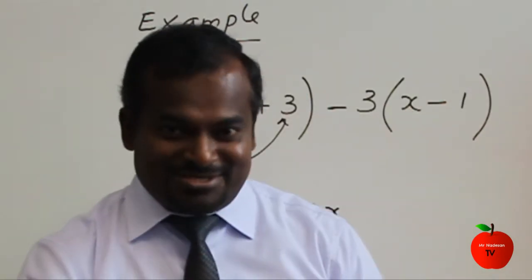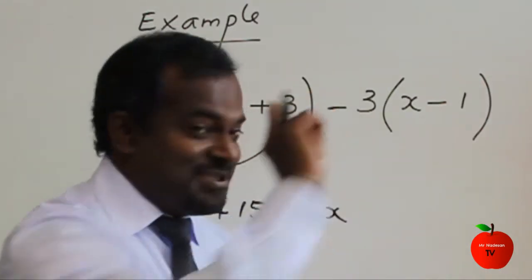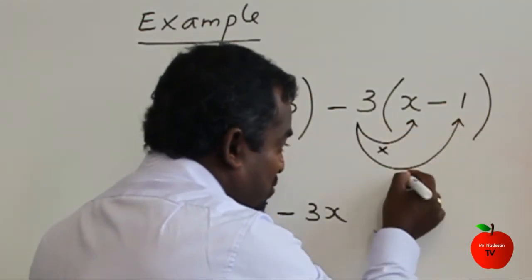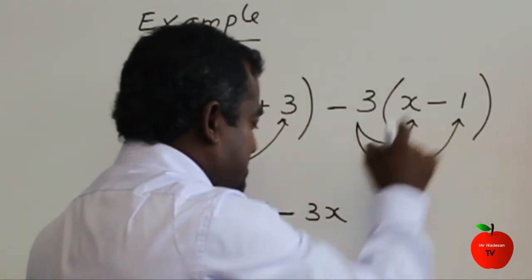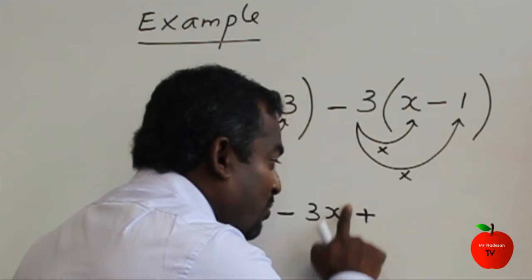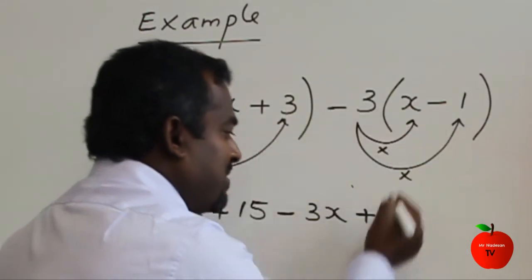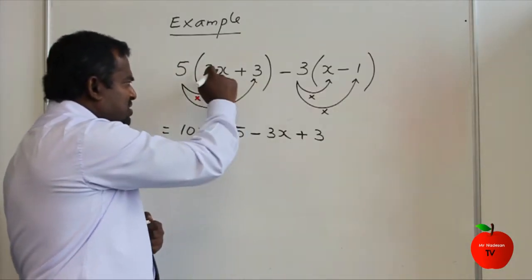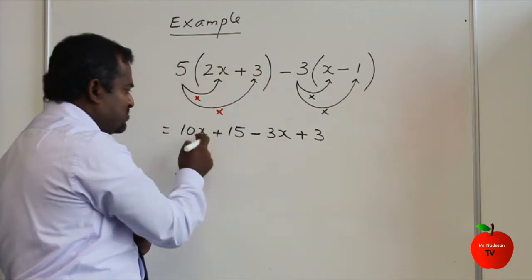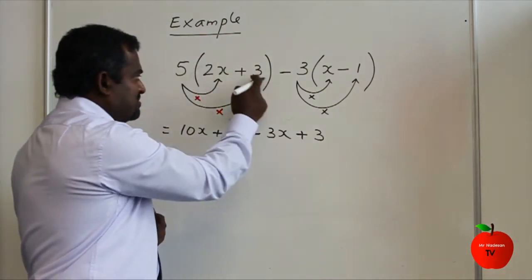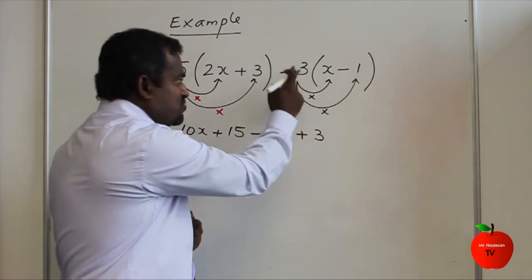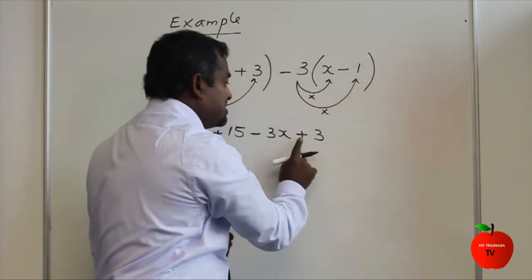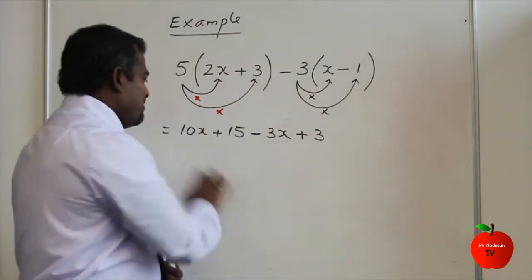Now the dangerous point. Minus is dangerous. We got a minus here, and we got a minus here. So make sure: minus times minus comes to plus. That's the dangerous point. Then you multiply the number. Very simply: expand each time means multiply. So 5 times 2x comes to 10x, plus 5 times 3 comes to 15. Then minus 3 times x comes to minus 3x. The dangerous point: minus times minus comes to plus. 3 times 1 is 3. We have done the expand — the multiplication part.